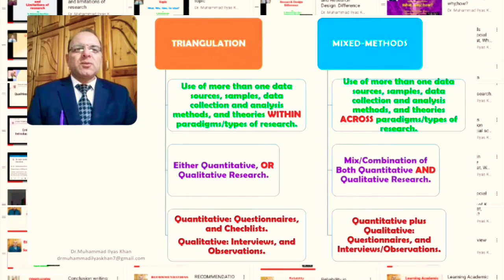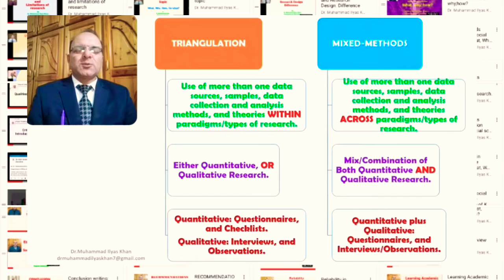Triangulation versus mixed methods research. Generally, the similarity between triangulation and mixed methods research is that in both cases, there is use of more than one data sources or samples, and data collection and analysis methods and theories. This is generally the common thing that we can see in triangulation and mixed methods research.